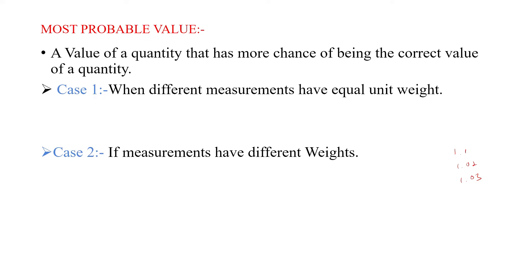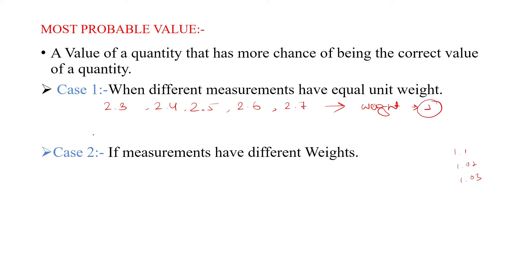In the first case, if you take equal unit weight — for example, measurement values are 2.3, 2.4, 2.5, 2.6, 2.7 — and for all these measurements the weight is unit weight (equal to 1), then the Most Probable Value is the summation of all values x1, x2, x3, x4, x5.